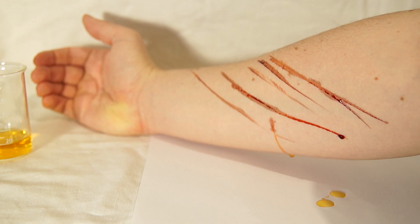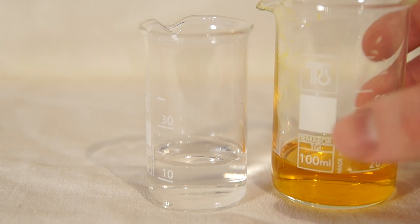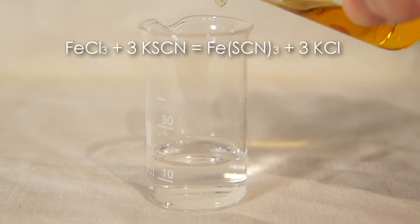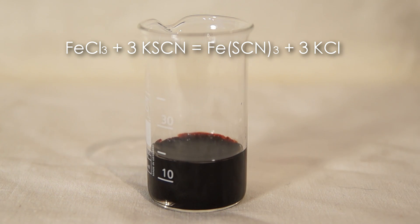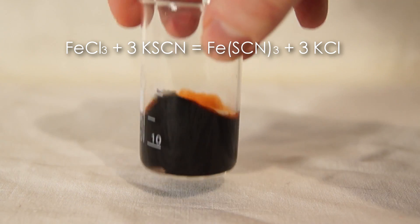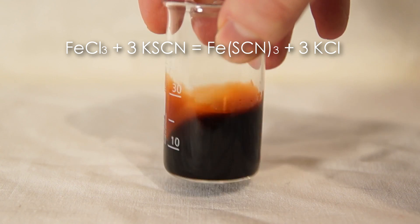So, what does happen? When iron chloride reacts with thiocyanate ions, a bright red substance is formed, named iron thiocyanate, which visually resembles the color of blood.